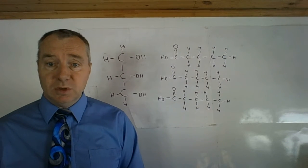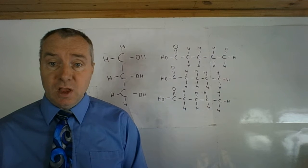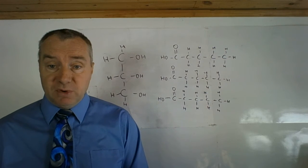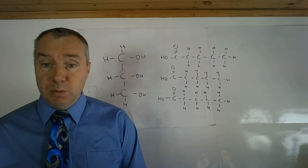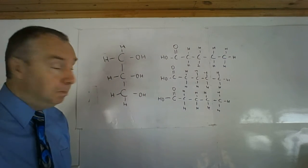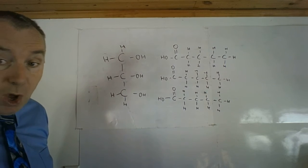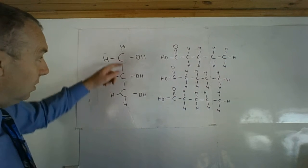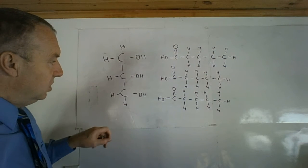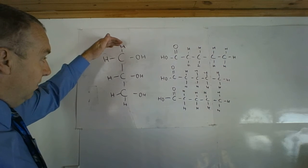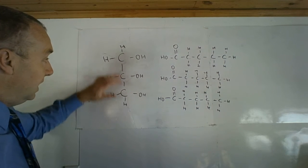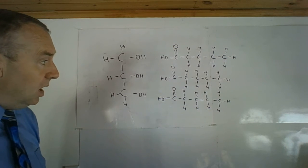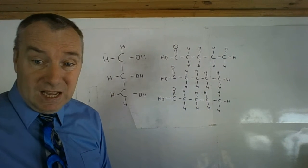Welcome to part 2 of the chapter 3 lecture. We're going to start talking about one of the lipid molecules: triglyceride. First, I want to show you the different components of a triglyceride. We have a glycerol — the suffix '-ol' denotes it's a form of an alcohol — so it has an OH group at the end of each carbon. We have three carbons with hydroxide groups on one side and hydrogen bonds covering the rest.